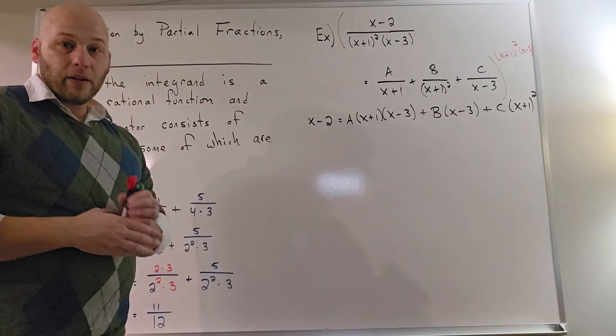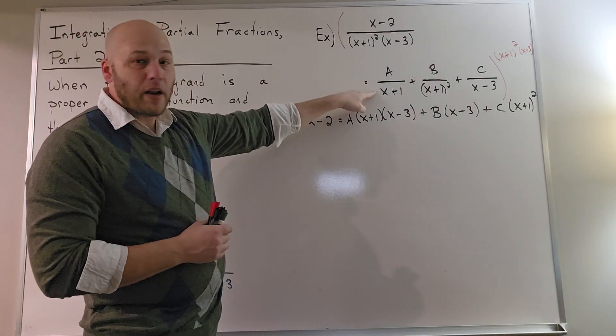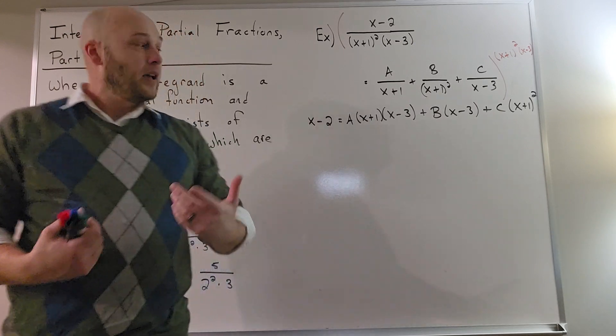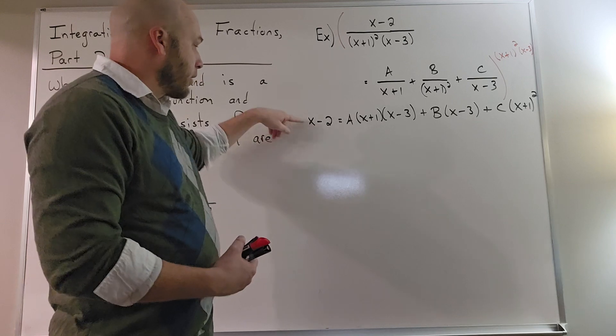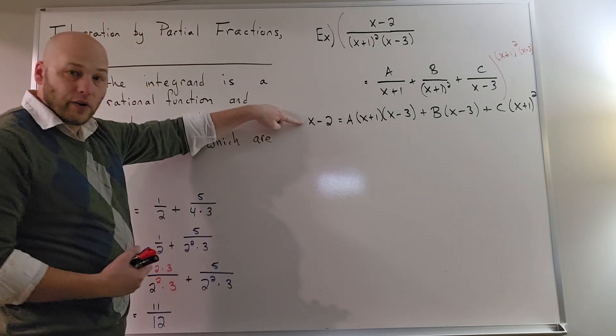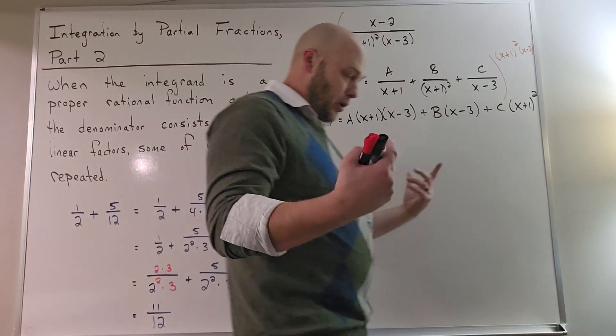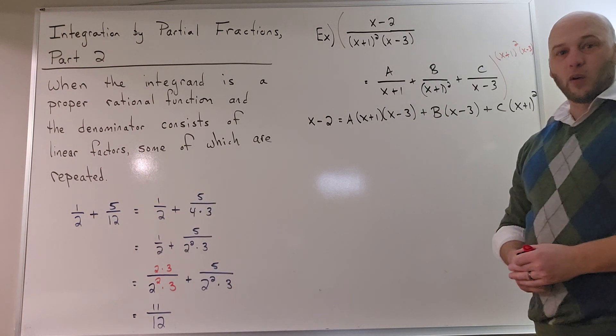Again, using the same terminology from the part 1 video, this right here is called my generic expansion. It's what are the possible fractions I could have had in order to add up to obtain this. And this right here, after I clear the fractions, we refer to this as the coefficient equation. Remember, the coefficient equation is so named because it's the equation from which we will generate the coefficients.